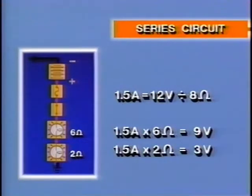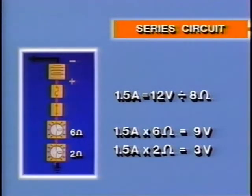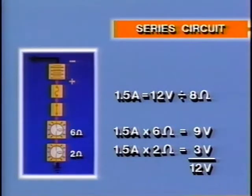Voltage across each load, called voltage drop, will be different if the resistance values are different. The sum of the voltages across each load, or voltage drops, is equal to the source, or battery voltage.